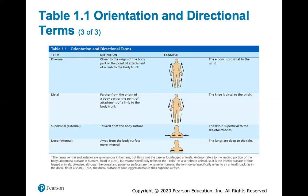Proximal means closer to the origin of the body part, or closer to the point of attachment of a limb to the body trunk. The elbow is proximal to the wrist — your elbow is closer to the point of attachment where your arm meets the trunk than your wrist is. Distal is further away from that point of attachment. The knee is distal to the thigh because it's further from where your leg connects with the trunk.